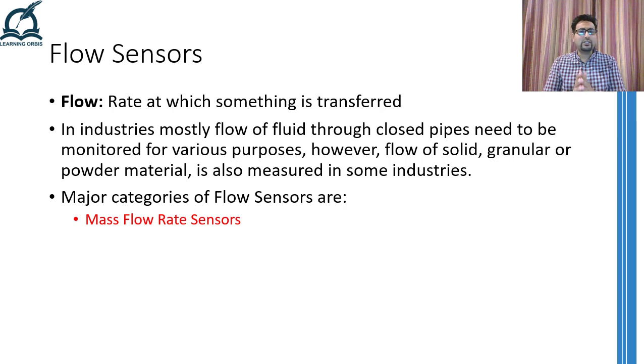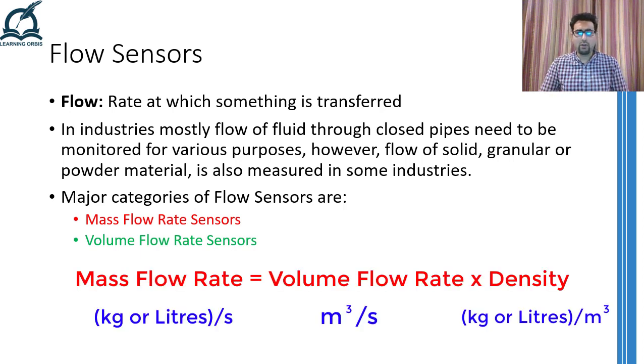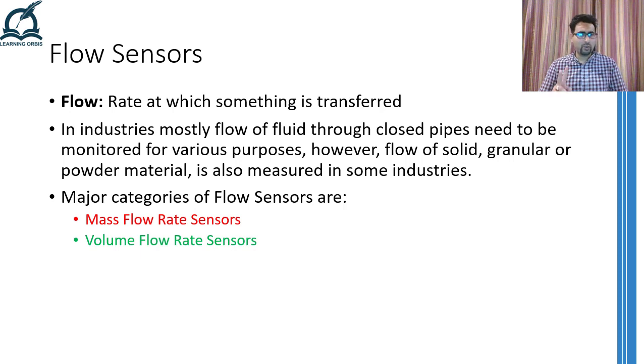In practice, there are two major categories of sensors that are used for measuring the flow rate. One category directly figures out the mass of the fluid which is flowing from one location to the other location in a unit time. Whereas the other category figures out the volume flow rate of the fluid. In the second category, if we know the density of the involved fluid, we can multiply the density with the volume flow rate to get the mass flow rate. Keeping these two categories in view, I have divided this lecture into two major sections. In the first one, I am going to discuss only the mass flow rate sensors. Whereas the volume flow rate sensors will be discussed in the second portion.